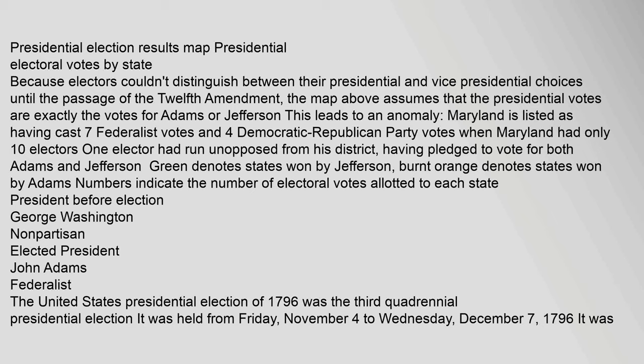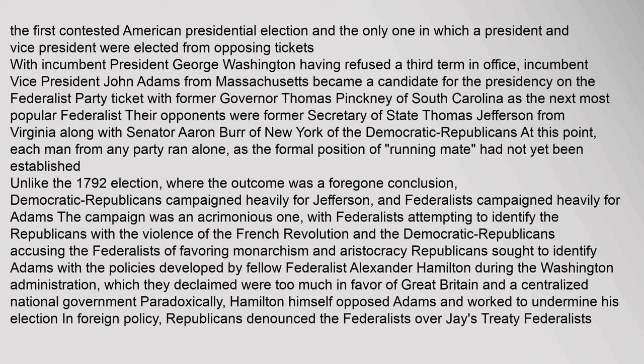Numbers indicate the number of electoral votes allotted to each state. Before the election, George Washington, nonpartisan, was the incumbent president. John Adams, Federalist, would become the next president. The United States presidential election of 1796 was the third quadrennial presidential election, held from Friday, November 4 to Wednesday, December 7, 1796. It was the first contested American presidential election and the only one in which a president and vice president were elected from opposing tickets.